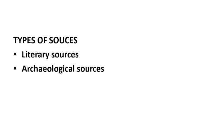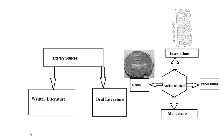There are two types of sources: literary sources and archaeological sources. Literary sources can be further classified into written literature and oral literature. Archaeological sources can be classified into four things: inscriptions, coins, monuments, and ruins.